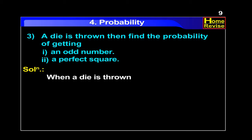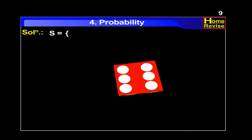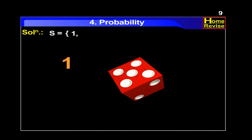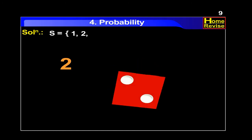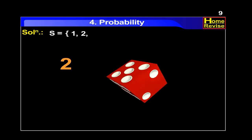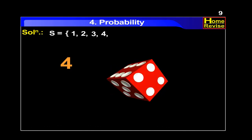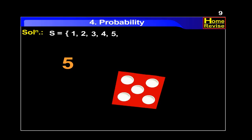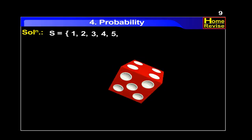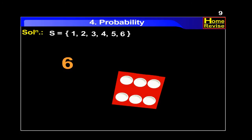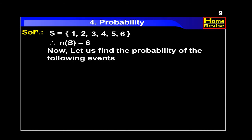When a die is thrown, sample space S is equal to, in curly brackets: 1, 2, 3, 4, 5, 6. Therefore, n of S is equal to 6. Now let us find the probability of the following events.